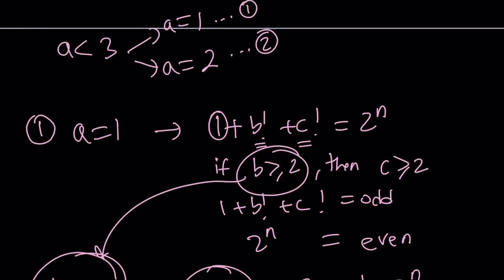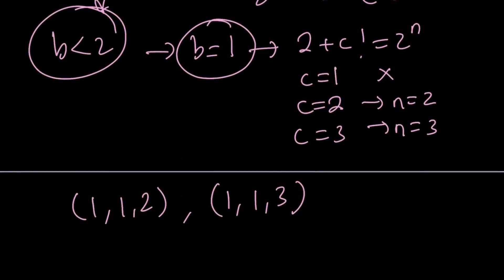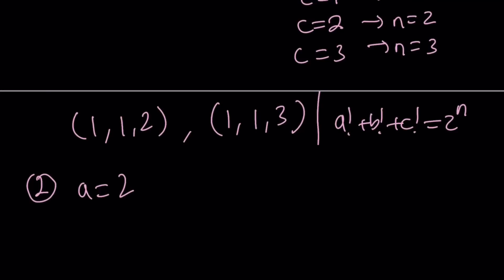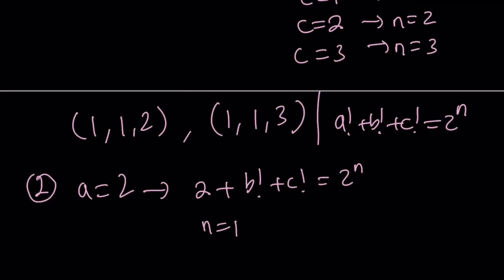Now we look at the second case, which is a equals 2. Our equation becomes 2 factorial plus b factorial plus c factorial equals 2 to the power n. We can test smaller values of n: n equals 1 gives 2 to the power 1 equals 2, so b factorial plus c factorial equals 0 — that's not going to work. So n equals 1 did not work.